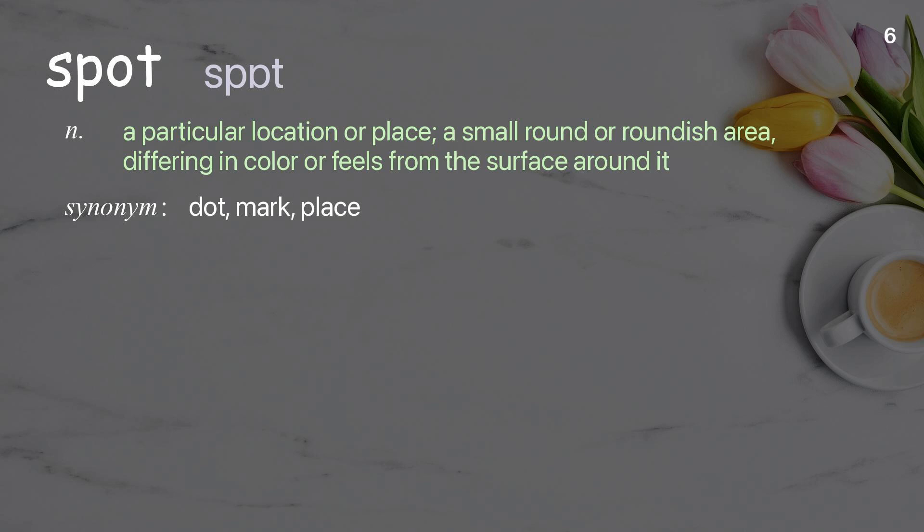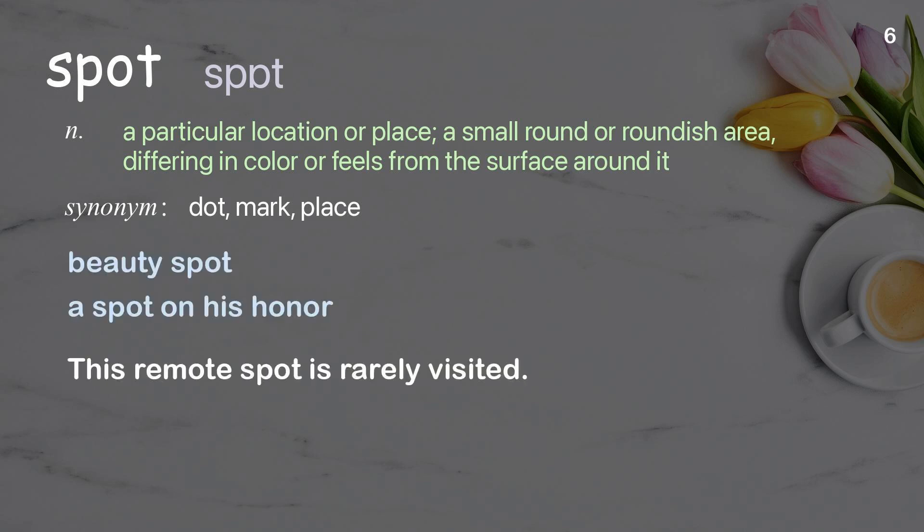Spot. A particular location or place; a small, round or roundish area differing in color or feel from the surface around it. Examples: Beauty spot. A spot on his honor. This remote spot is rarely visited.